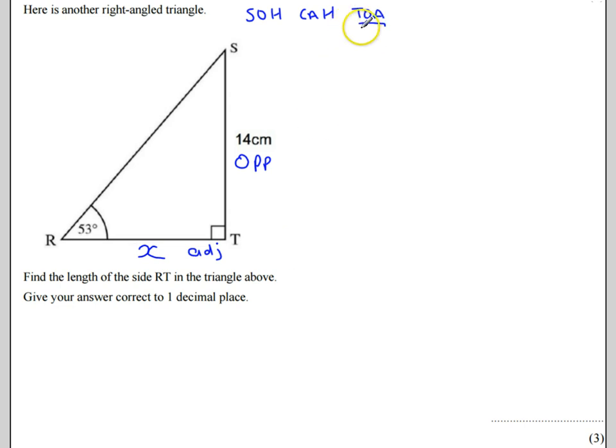So I can say that the tan of my angle, so tan of 53 degrees, is going to be equal to the opposite divided by the adjacent. So that's going to be 14 divided by X.